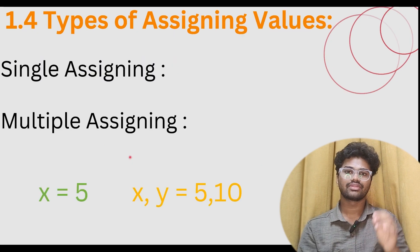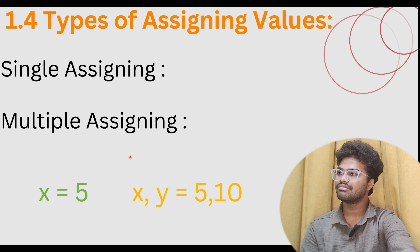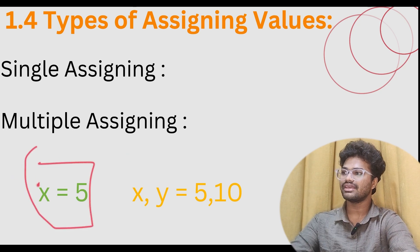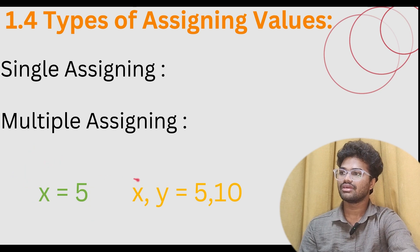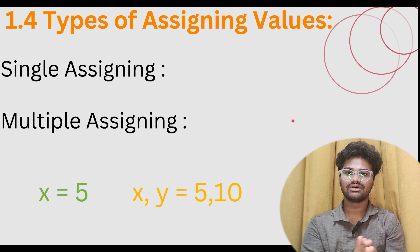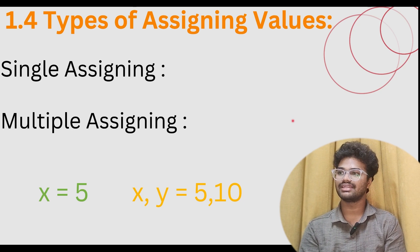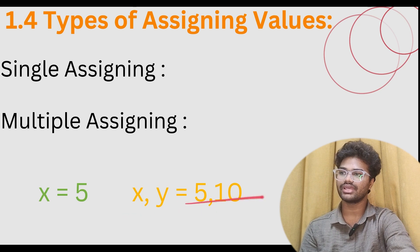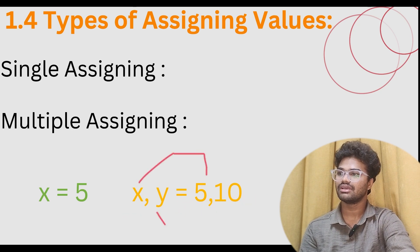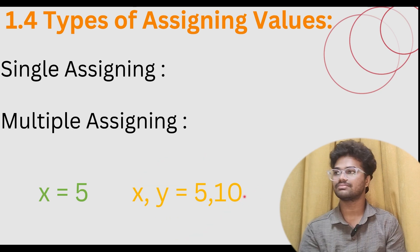Types of assigning values: there are two types. Number one is single assigning, and number two is multiple assigning. For single assigning: x equal to 5. For multiple assigning: x, y equal to 5, 20 — assigning two variables in one line. In C you would write int x equal to 5 and y equal to 20 on separate lines.